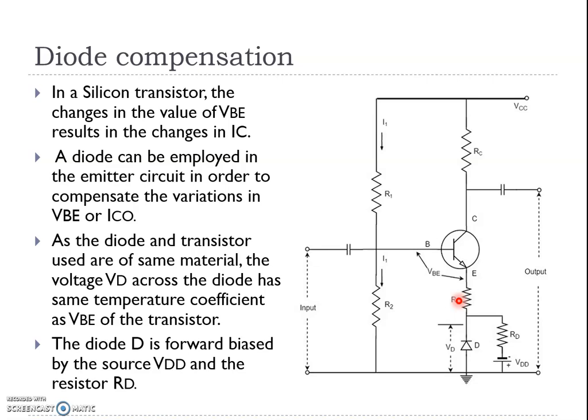One VDD and an extra resistor provide forward bias to the diode from the source VDD. The temperature effects on the diode will be almost similar to those on the transistor.